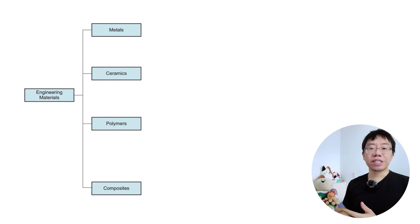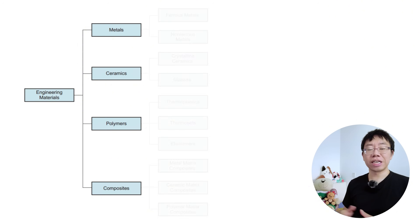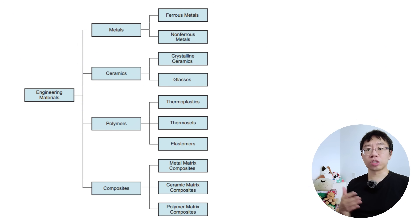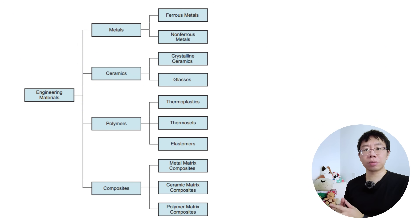To select a material, you first need a mental map of the available landscape. We categorize engineering materials into four primary families, each based on their atomic bonding and resulting macroscopic behavior.